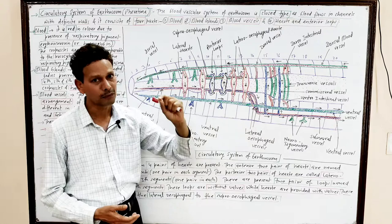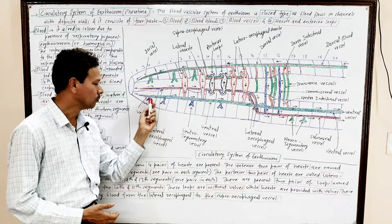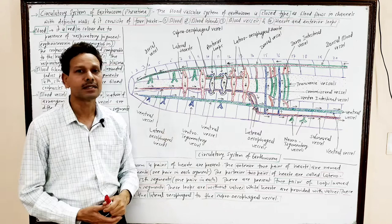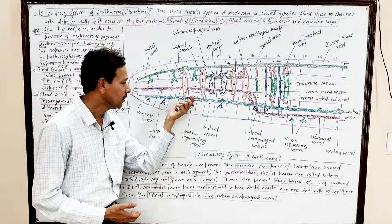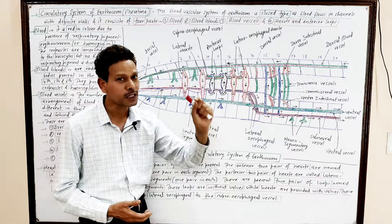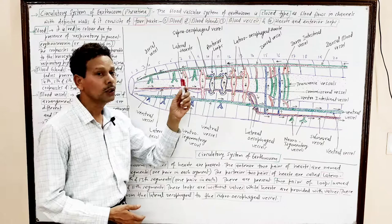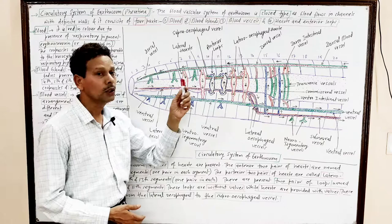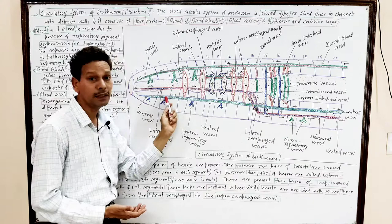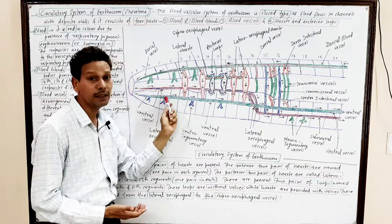The ventral vessel acts as a distributing channel. It gives off ventral tegumentary vessels to each segment, supplying blood to the body wall and nephridia, including septal nephridia. The dorsal blood vessel runs mid-dorsally above the alimentary canal, and the ventral blood vessel runs mid-ventrally below the alimentary canal.